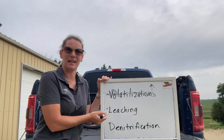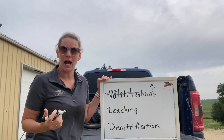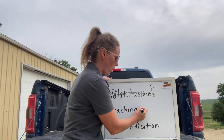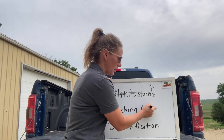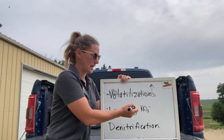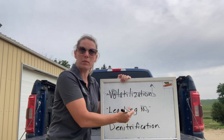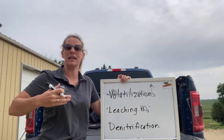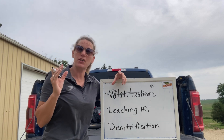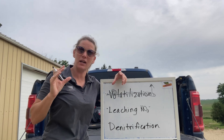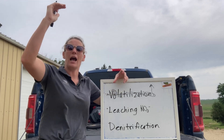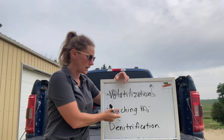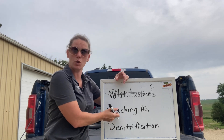The second way is leaching. Leaching happens when you get nitrate — NO3. We're losing nitrogen in the nitrate form because our soil has a negative charge and nitrate has a net negative charge, so the nitrate is not sticking to the soil. As we get water flushing through our soil profile, we can be losing this nitrogen to leaching.